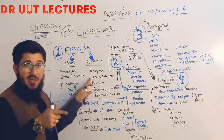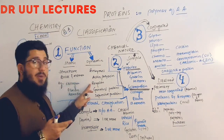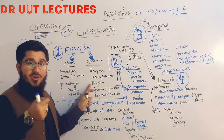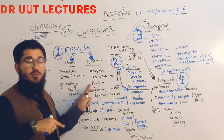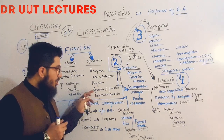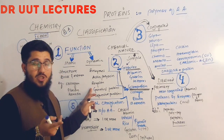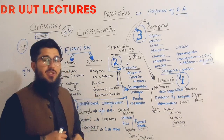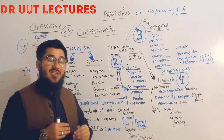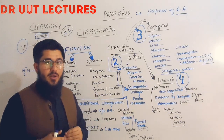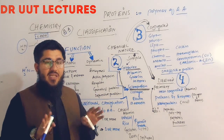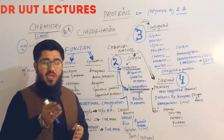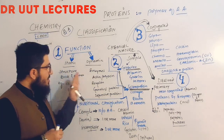Dynamic proteins also include receptors, which receive signals from the environment and transfer them inside the cell to perform a specific job, as well as genetic proteins like histones, which are responsible for genetics, and defensive proteins that fight against foreign germs — for example, immunoglobulins such as IgG, IgM, and others.